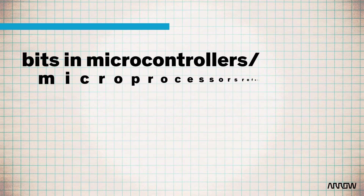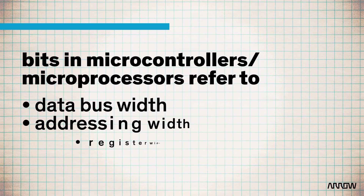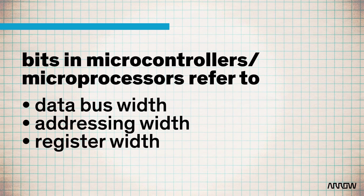That can refer to the data bus width, the addressing width — so kind of how many different unique memory addresses can it understand — or the register width. The register width is really how much data you can manipulate at once.